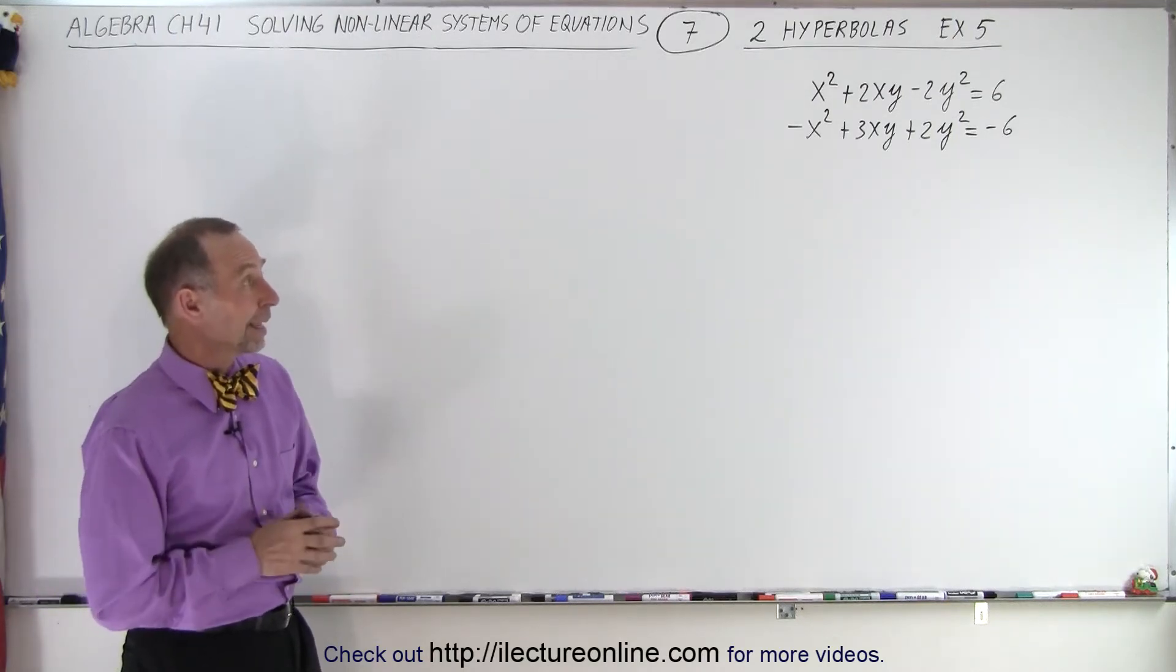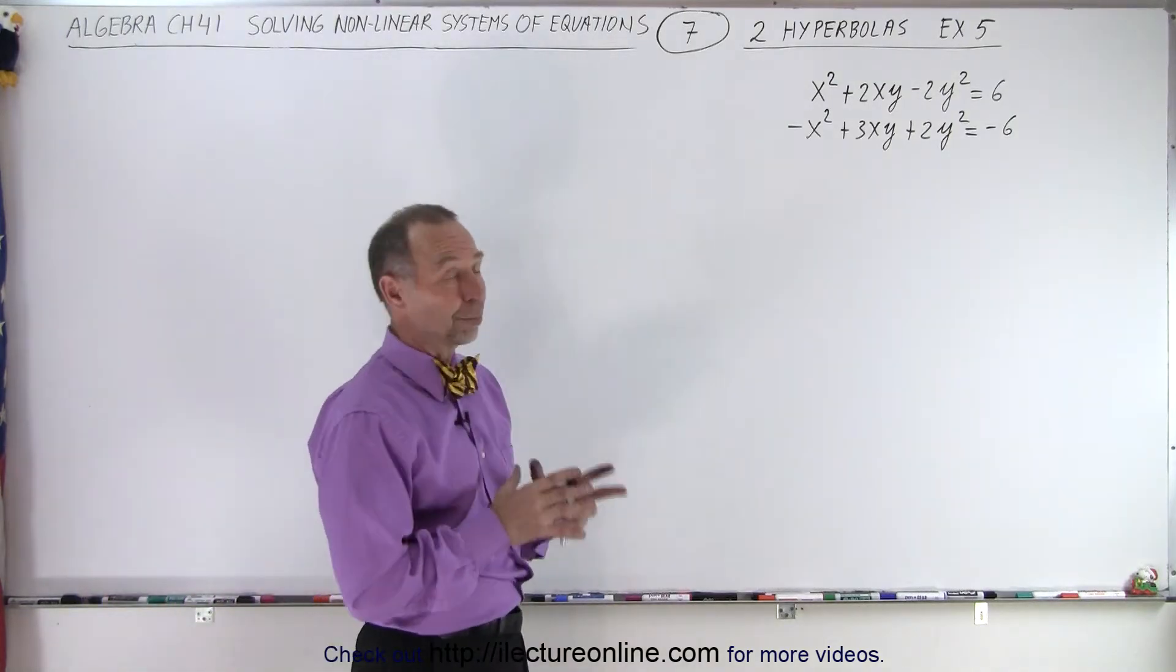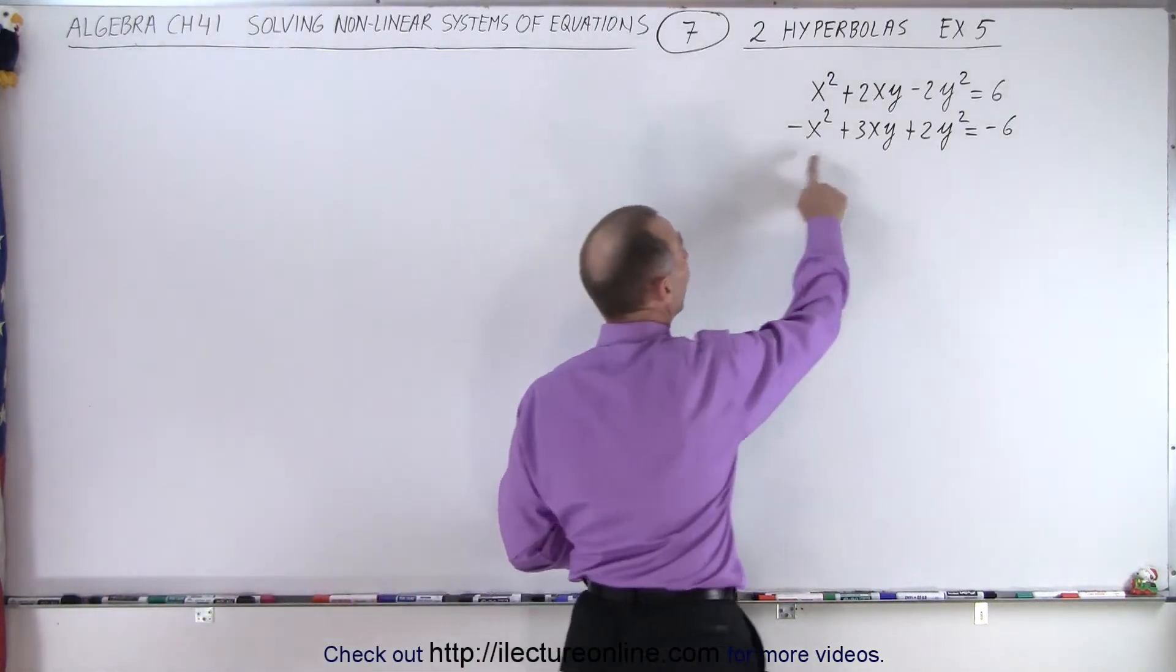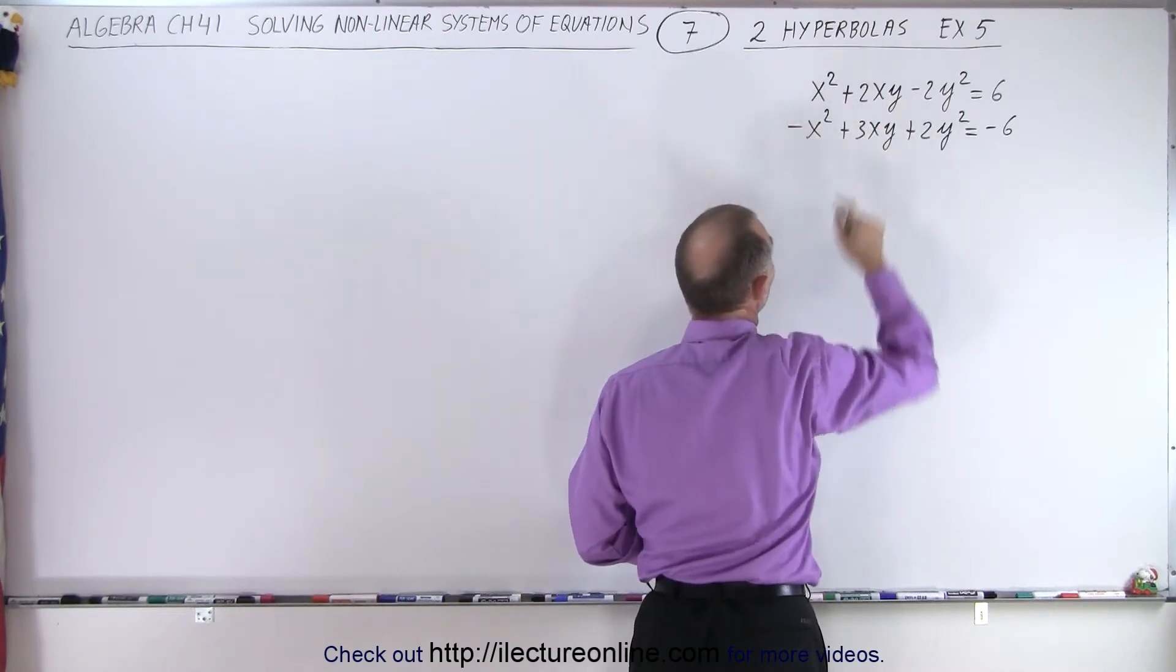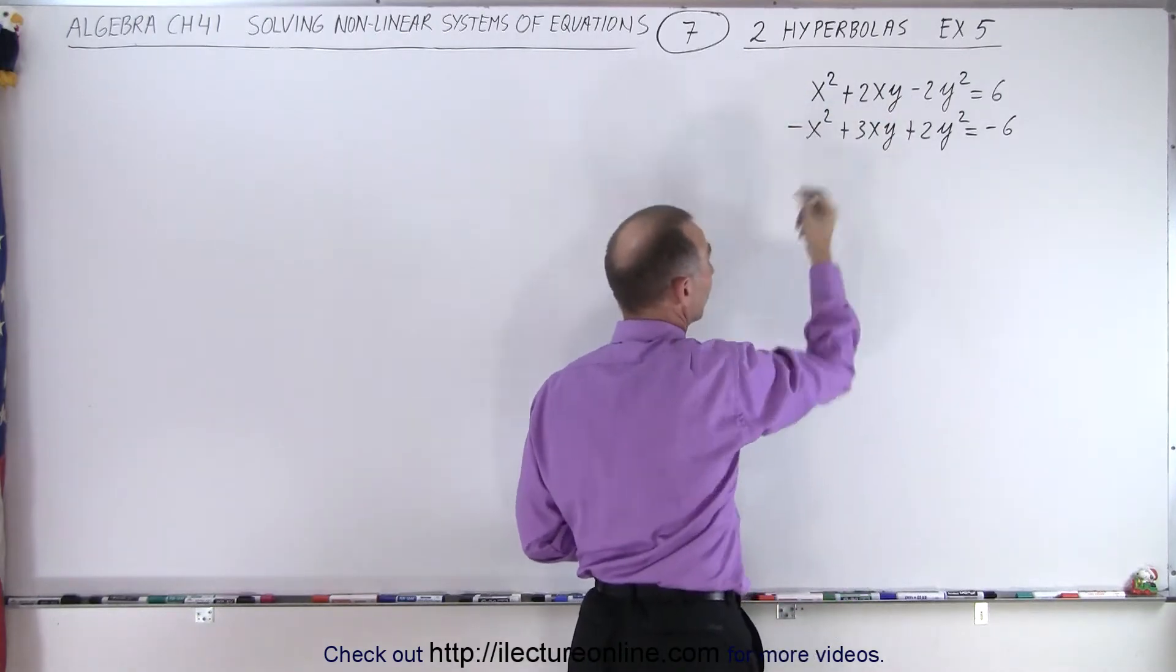Now in this particular case, take a look. I believe there's our two hyperbolas because we have an x squared and a y squared. And one is positive, the other one is negative. And then here's the other way around.